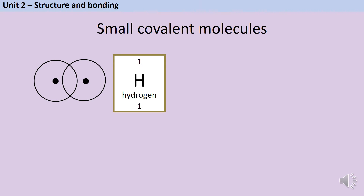As part of GCSE chemistry, you need to be able to draw eight named examples of small covalent molecules. 'Small covalent molecule' is a technical term, not just a judgment on size. In these diagrams, which we call dot and cross diagrams, we use dots and crosses to represent electrons. There's no difference between them — it's just to make it easier to see where those electrons are coming from. We're also only going to draw the outer shell of the atoms, because it's only the outer shell electrons that bond. Each covalent bond must have one or more pairs of electrons.